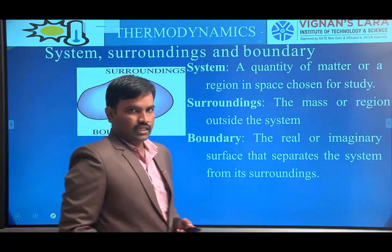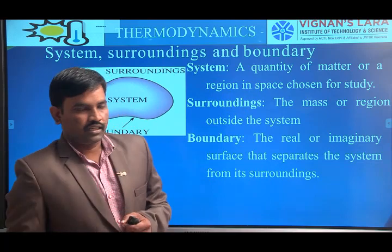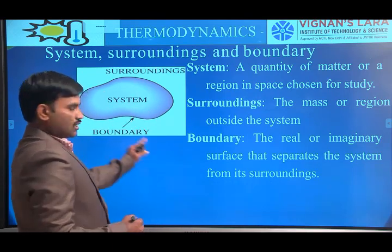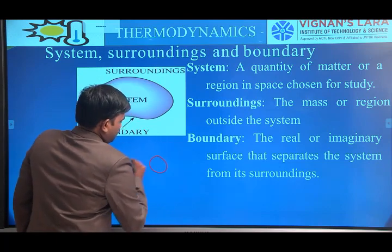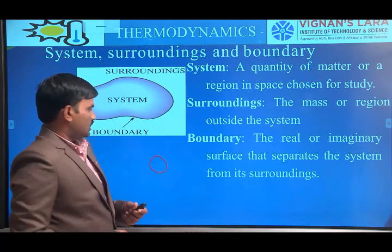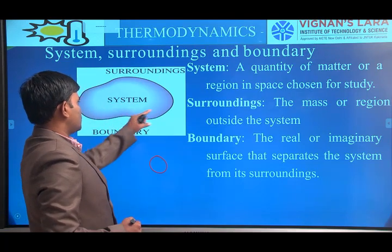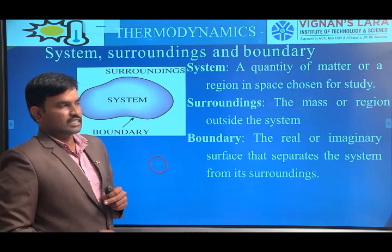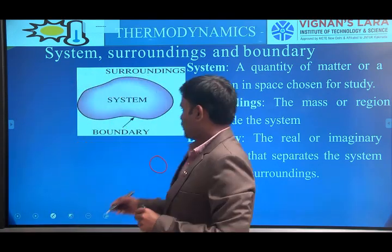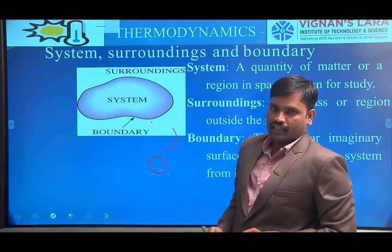Some basic concepts in thermodynamics — first one is system. What is meant by a thermodynamic system? If you consider some quantity of matter or a region in space, and in that region you want to analyze the substance, that is the thermodynamic system. Outside the system we call the surroundings, and the system and surroundings are separated by the boundary.